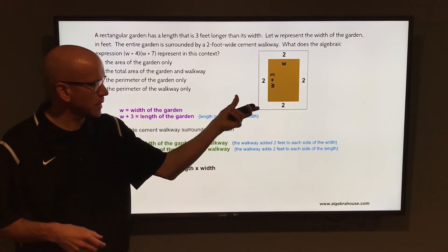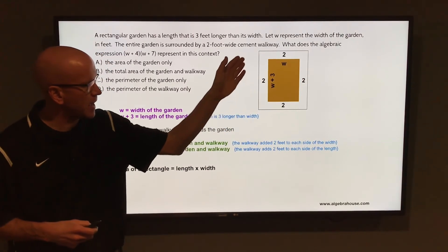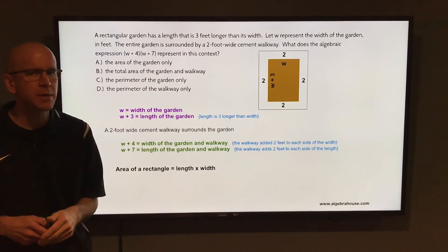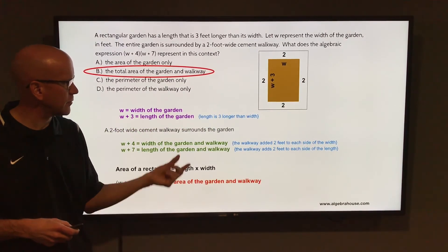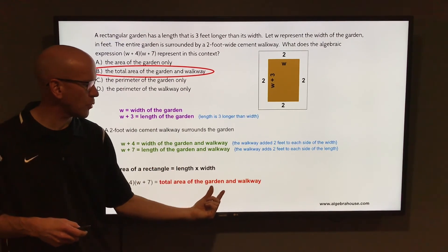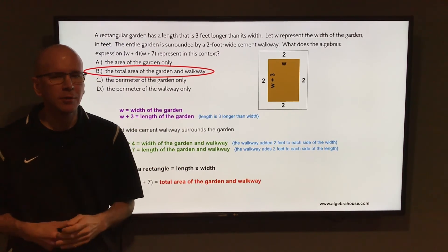Well, the area of a rectangle is length times width, so that W plus four times W plus seven is the area of that entire rectangle which includes the garden and the walkway. So W plus four times W plus seven from these answer choices represents the total area of the garden and the walkway, and that is letter B. Happy Gardening!